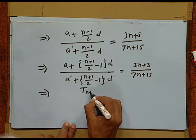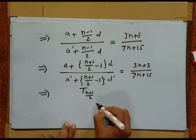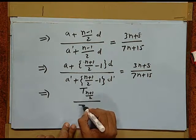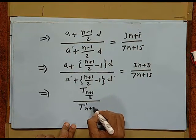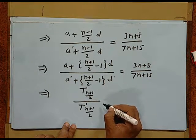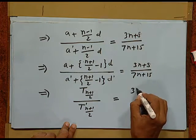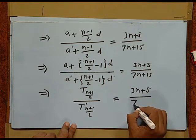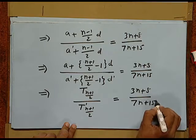This expression represents the ((n+1)/2)th term of the first series divided by the ((n+1)/2)th term of the second series, and this equals (3n + 8) / (7n + 15).